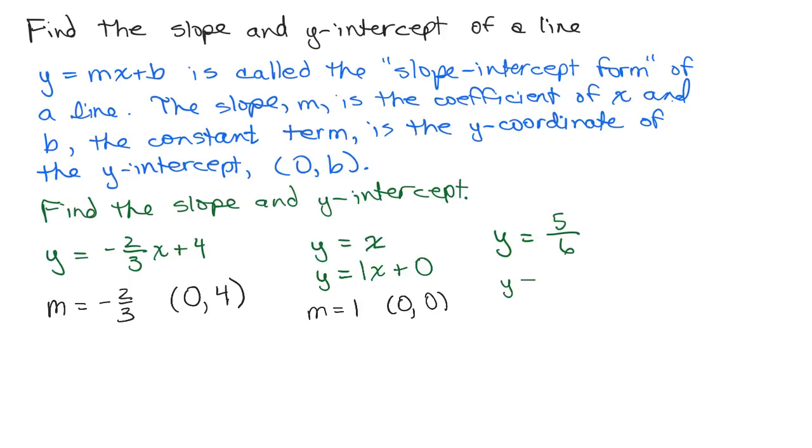So if you rewrote that as y equals 0 times x plus 5/6, then we can see that the slope is 0 in this one.